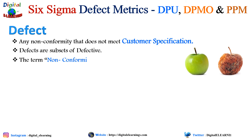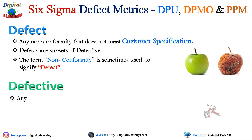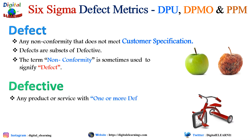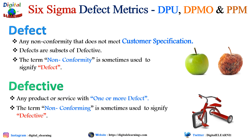The term non-conformity is often referred to as defect. Any product or service with one or more defects is a defective product. The term non-conforming is sometimes referred to as defective. So we use the word non-conformity for defect and non-conforming for defective. Customers expect products or services to meet expectations, and when they don't, a defect or defective is produced.